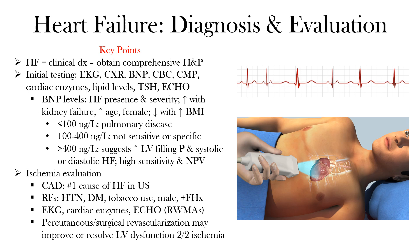Most patients will present with dyspnea or shortness of breath, followed by orthopnea and paroxysmal nocturnal dyspnea. The presence of orthopnea or jugular venous distension are most predictive for an elevated pulmonary capillary wedge pressure, which is similar to the left atrial pressure, suggesting left-sided heart failure.